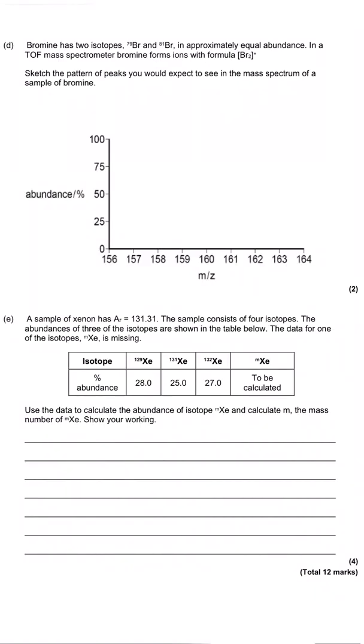Then the question moves on to look at isotopes, and we're looking at bromine. We're told that bromine has got two isotopes, bromine-79 and bromine-81, and they are approximately equal abundance, so there's 50% of each of them. We're then told that in a time-of-flight mass spectrometer, the bromine molecule forms the ion Br2+, and so what that means is we've got one atom of bromine connected to another atom of bromine,